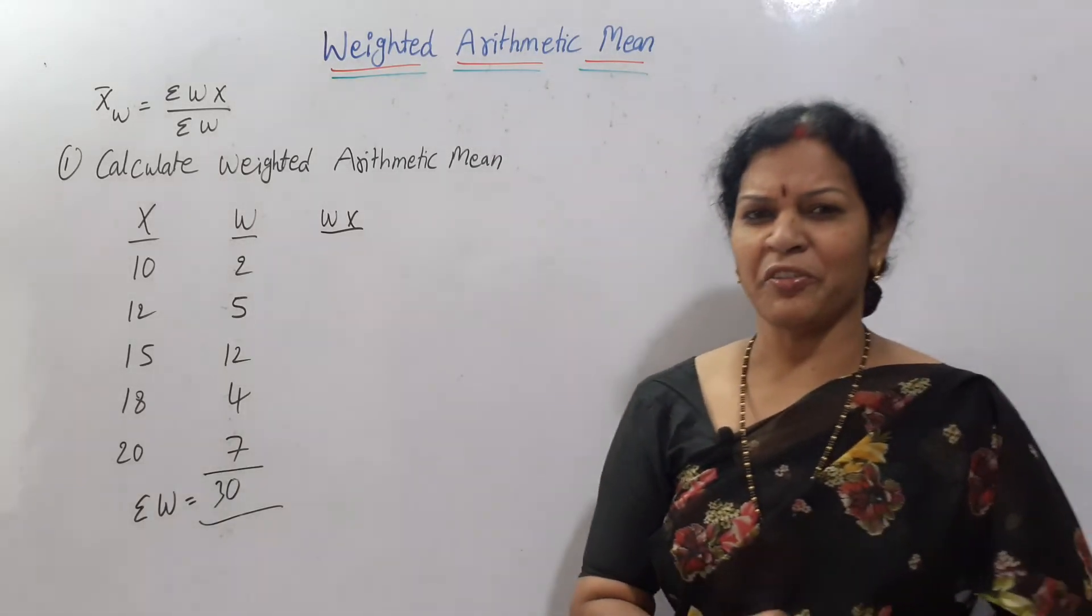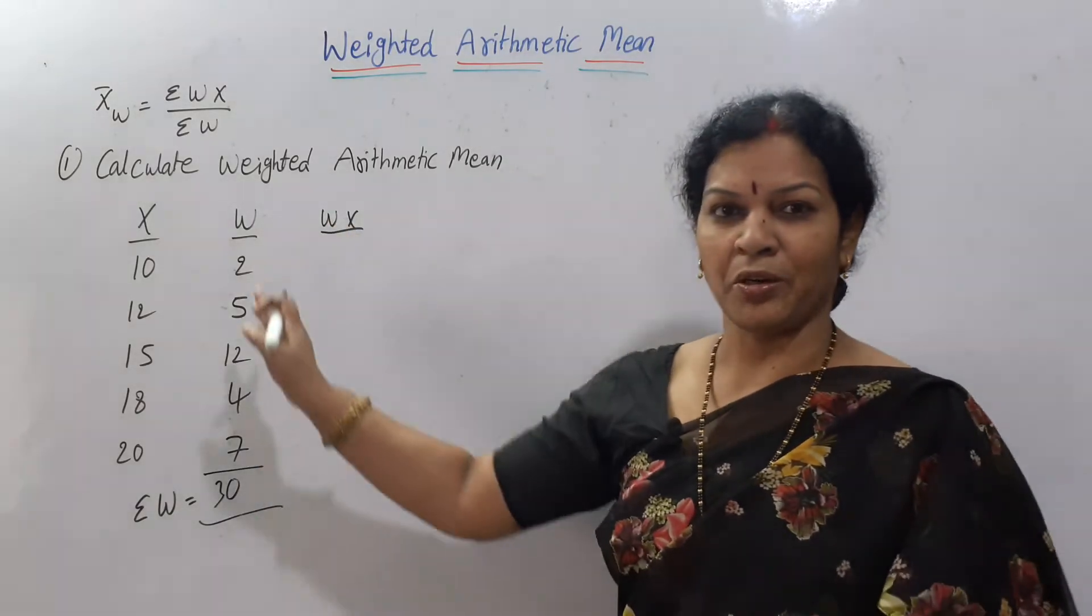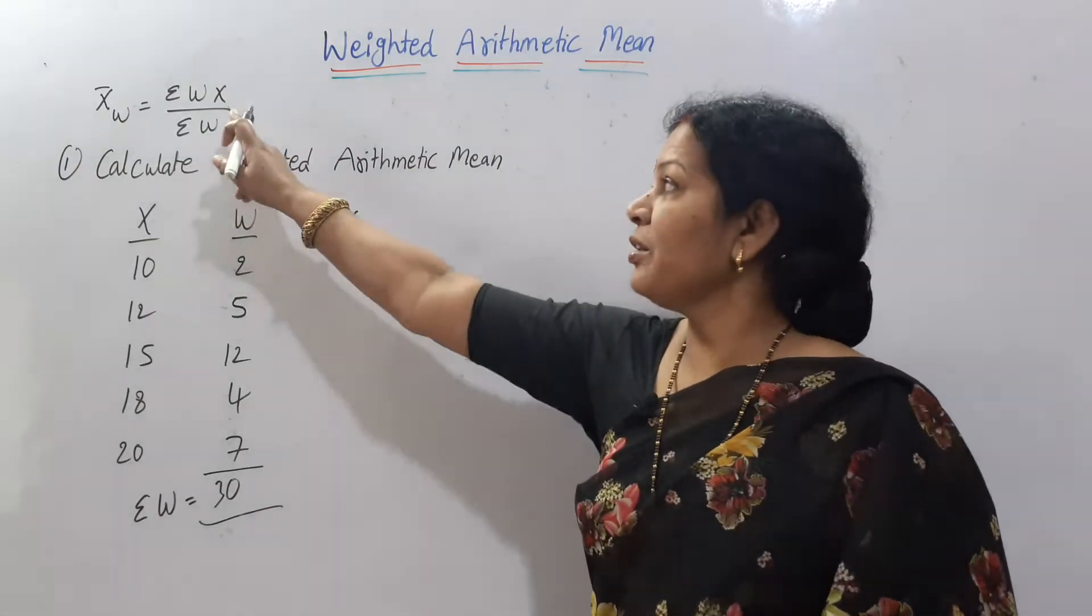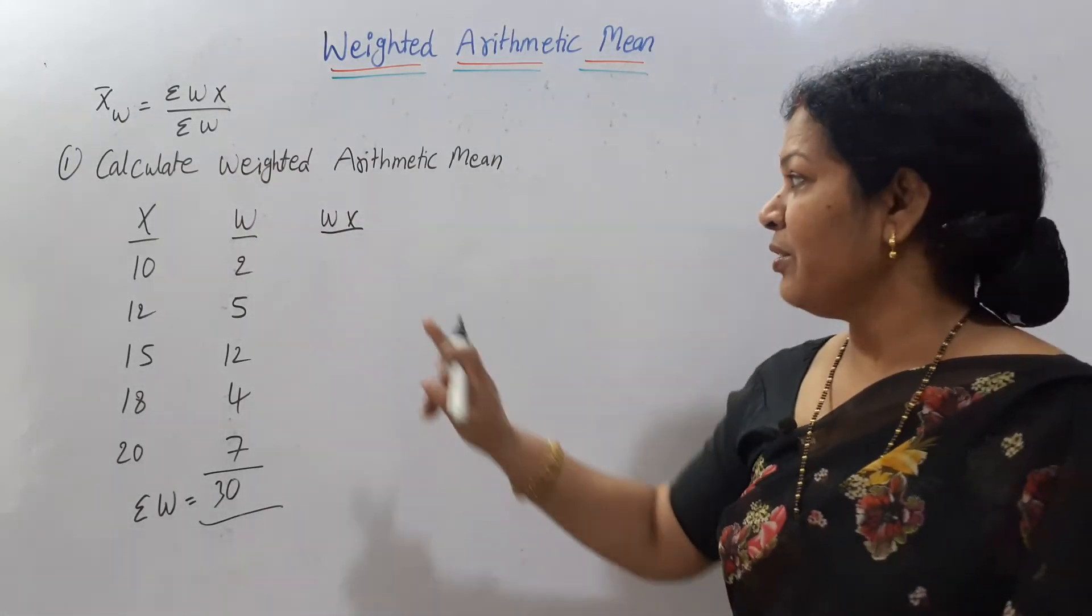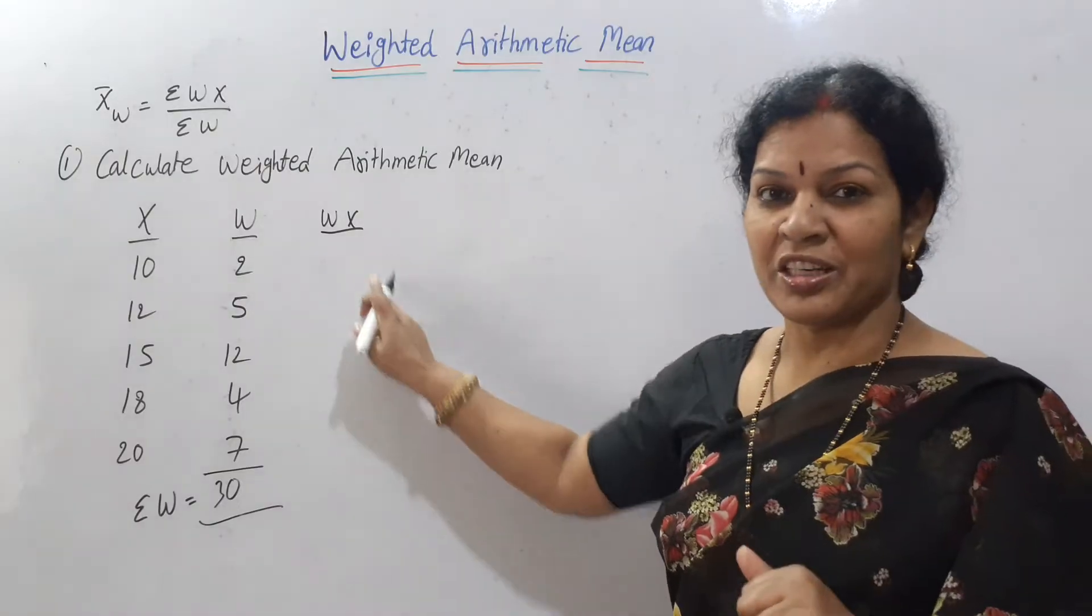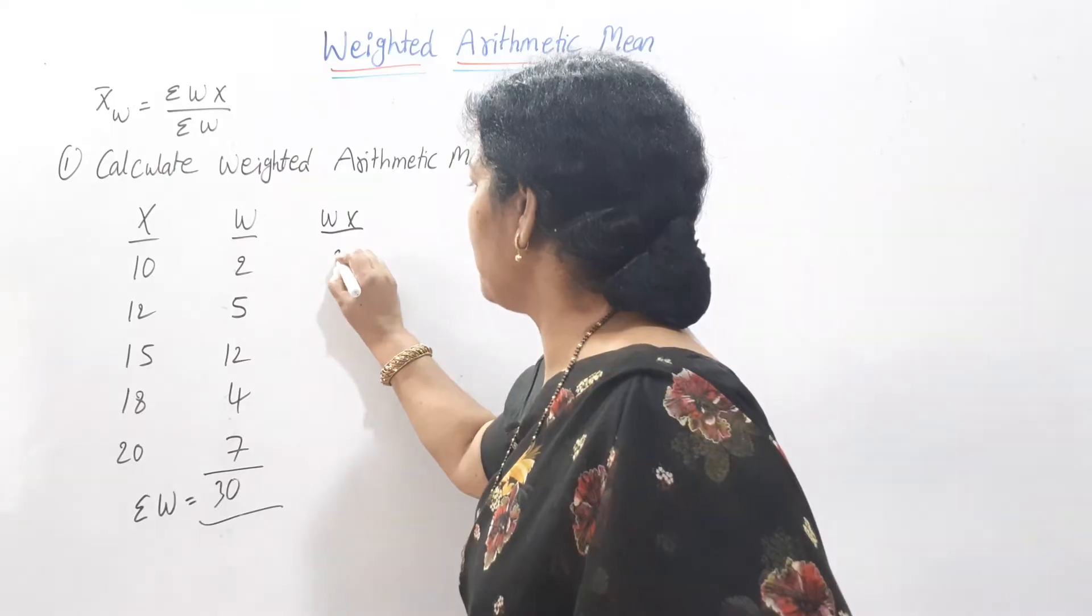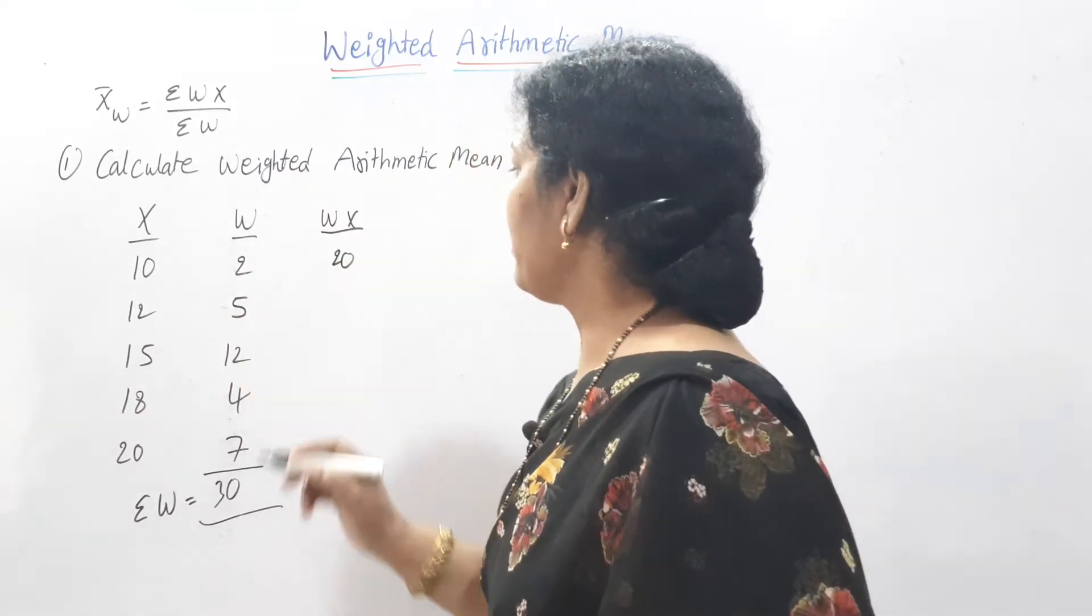Earlier generally we used to get the frequency. This was the frequency, but now here we got weights. Σw you got. Now we need Σwx. First we will calculate wx, then after that we will get Σwx. wx means 10×2 = 20, 12×5 = 60, 12×15...